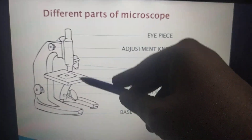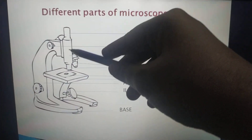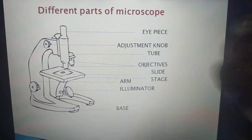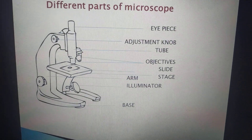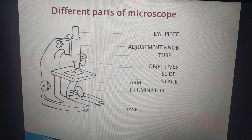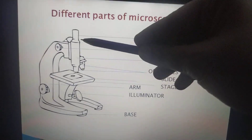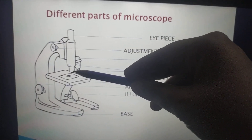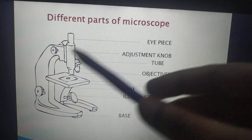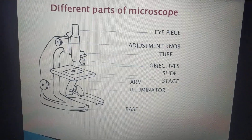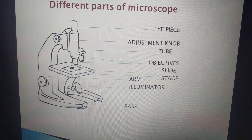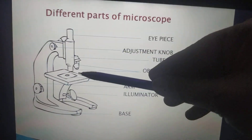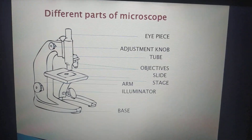Next is this tube-like structure, which establishes a connection between the eyepiece and the objective lens. This tube connects the eyepiece to the objective lens.